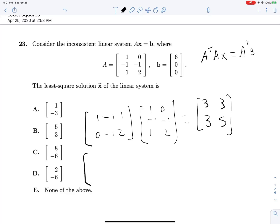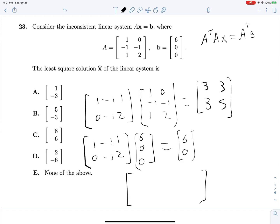Okay, now we're computing A transpose B: [1, -1, 1] [0, -1, 2] multiplied by [6, 0, 0]. This gives us a 2 by 1 matrix with entries 6 and 0. So we can set up an augmented matrix with [3, 3, 6] [3, 5, 0]. This can become [1, 1, 2] [0, 2, -6], then [1, 1, 2] [0, 1, -3]. Oh wait, I can't add, can I? Yeah, we're subtracting this, so we get 0 and 5. And that's it. 5, -3. Done.